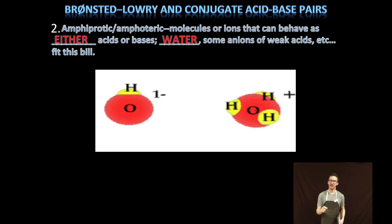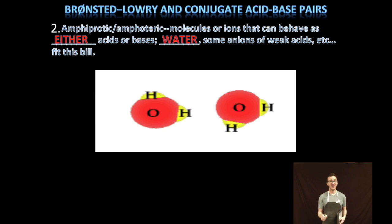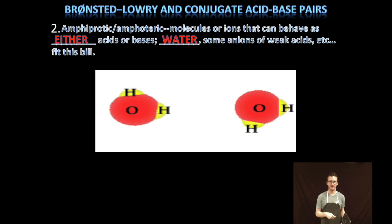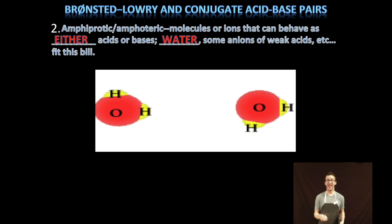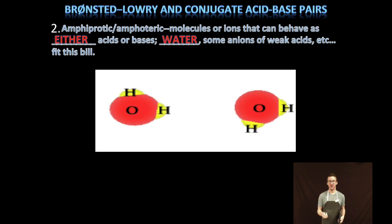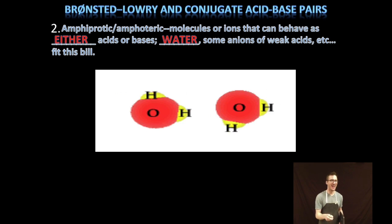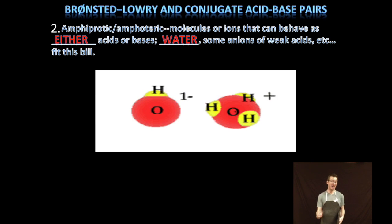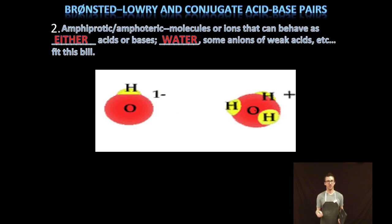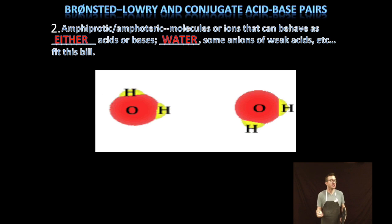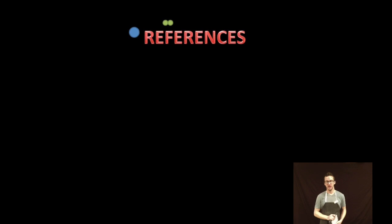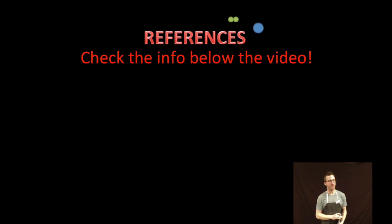Finally, some substances can act as either an acid or a base depending on what they're mixed with. We call these amphoteric, or amphiprotic. They can both donate and accept a proton. Water is an excellent example, and some anions of weak acids are also amphoteric. In order to be amphoteric, a substance must have at least a hydrogen ion to donate and generally a lone pair of electrons to accept a hydrogen ion. That does it for our introduction to the definitions of acids and bases — have a fantastic day!